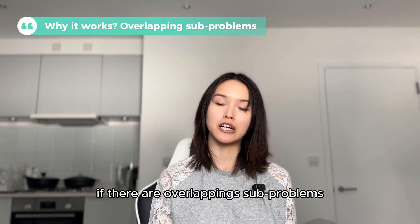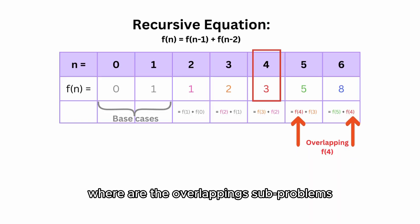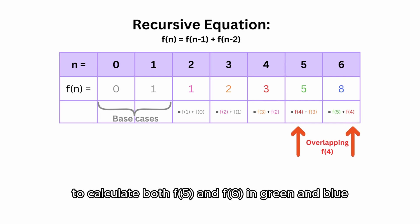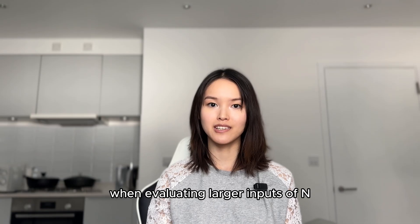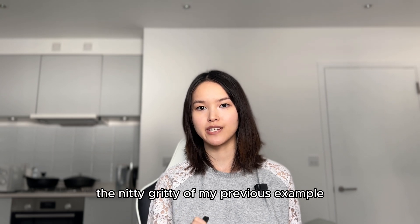That only saves time if there are overlapping sub-problems — and you'd be right to ask. For example, F(4) is an overlapping sub-problem used to calculate both F(5) and F(6). All overlapping sub-problems are shaded in yellow here. We memoize to store the answers to these overlapping sub-problems, so we avoid redundant recalculation when evaluating larger inputs of n.